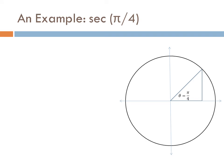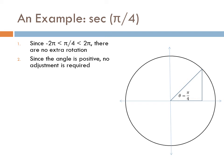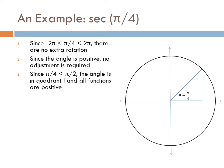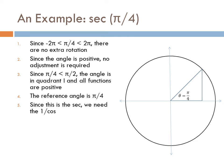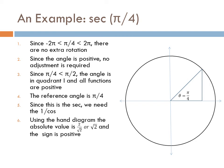Let's look at an example. We want to find the secant of pi over 4. Pi over 4 is well below 2 pi, so there's no extra rotation, and the angle is positive. Since pi over 4 is less than pi over 2, the angle is in quadrant 1, so the function is positive. The reference angle is pi over 4. Since this is the secant, we need 1 over the cosine. Using the hand diagram, the absolute value is the reciprocal of √2/2, which is 2 over √2. The sign is positive, and removing the radical from the denominator gives the square root of 2.